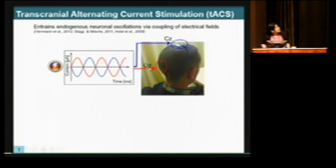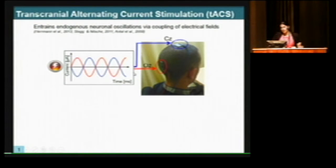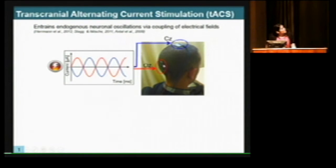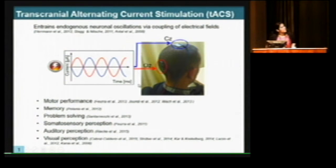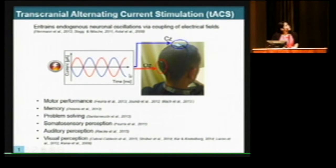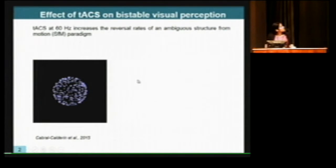We are mainly interested in using TACS with the idea of entraining brain oscillations and to test the causality of these oscillations for particular cognitive tasks. This is the montage we are using — a global montage with one electrode placed over the occipital cortex and the other over the vertex. With similar electrode montages, TACS has been found to modulate motor performance, memory, problem solving, and visual perception.